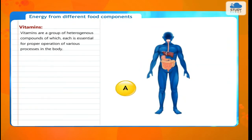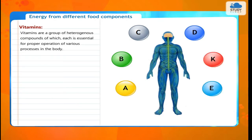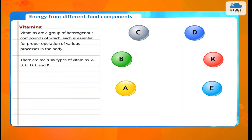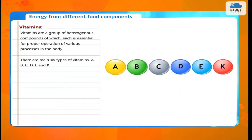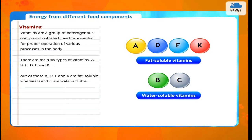Vitamins are a group of heterogeneous compounds of which each is essential for the proper operation of various processes in the body. There are 6 main types of vitamins: A, B, C, D, E, and K. Out of these, A, D, E, and K are fat soluble, whereas B and C are water soluble.